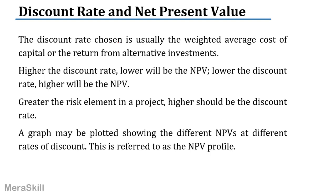What is the discount rate? You can call it the rate of return, the cost of capital, or the hurdle rate. The discount rate is usually the weighted average cost of capital. Sometimes if you see this term, don't be confused — it's the weighted average cost of capital or the return from alternative investments. My cost of capital considers both equity and debt — what is the cost of equity, what is the cost of debt — and I arrive at the weighted average cost of capital used as the hurdle rate or discount rate.